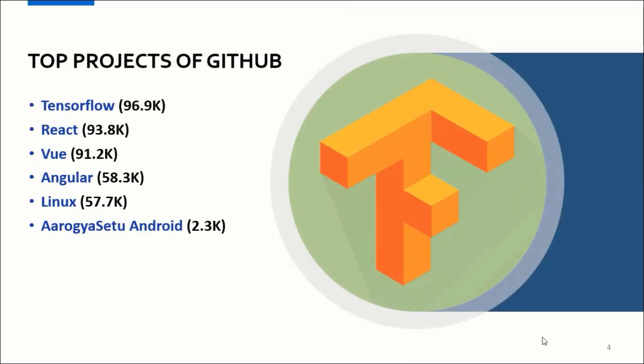So let us see what are the top projects on GitHub. Looking at the slide, we have TensorFlow, React, Angular, and Linux. Everyone knows that TensorFlow is the greatest framework for machine learning, built by Google with contributions from many developers.